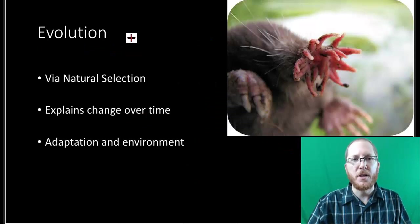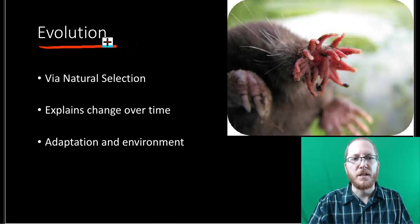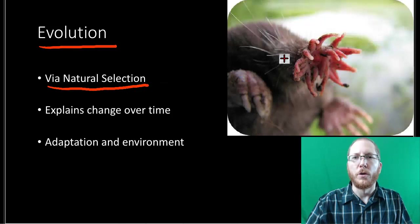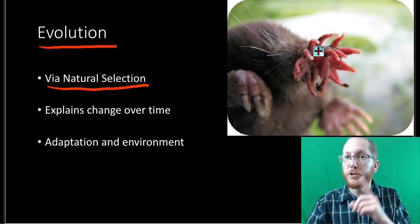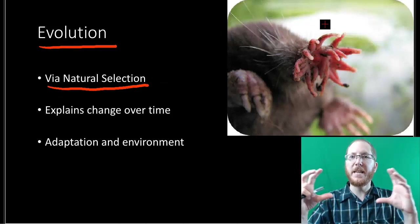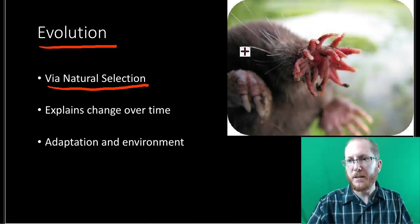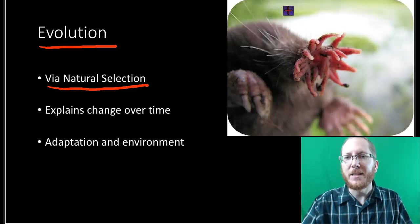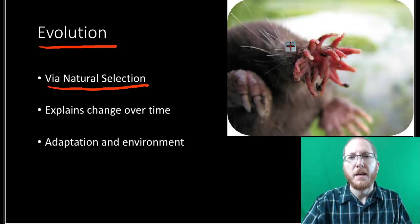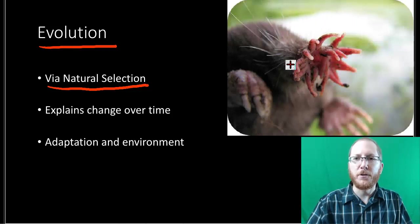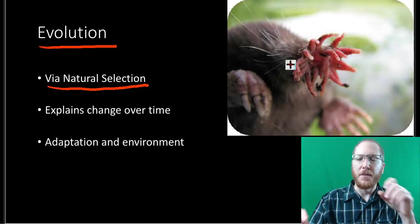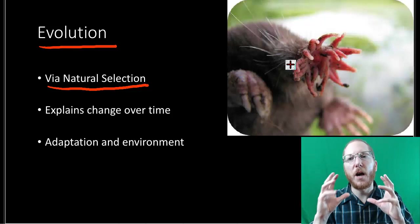And then our last one here is going to be evolution, which we talked about briefly before, but the idea is just this is change over time, and it's going to happen because of natural selection. Where certain characteristics, which are due to your genes, remember, we've got all this stuff tying together now. So if you've got genes like our dashingly handsome fellow here, the star-nosed mole, it's got where it looks like it's got fingers coming out of its face.